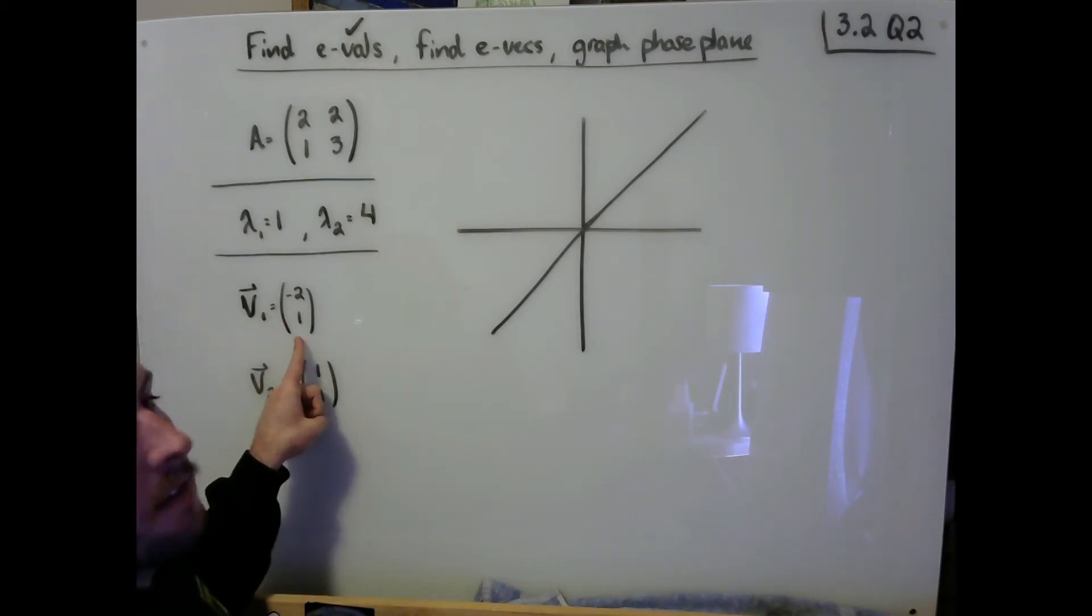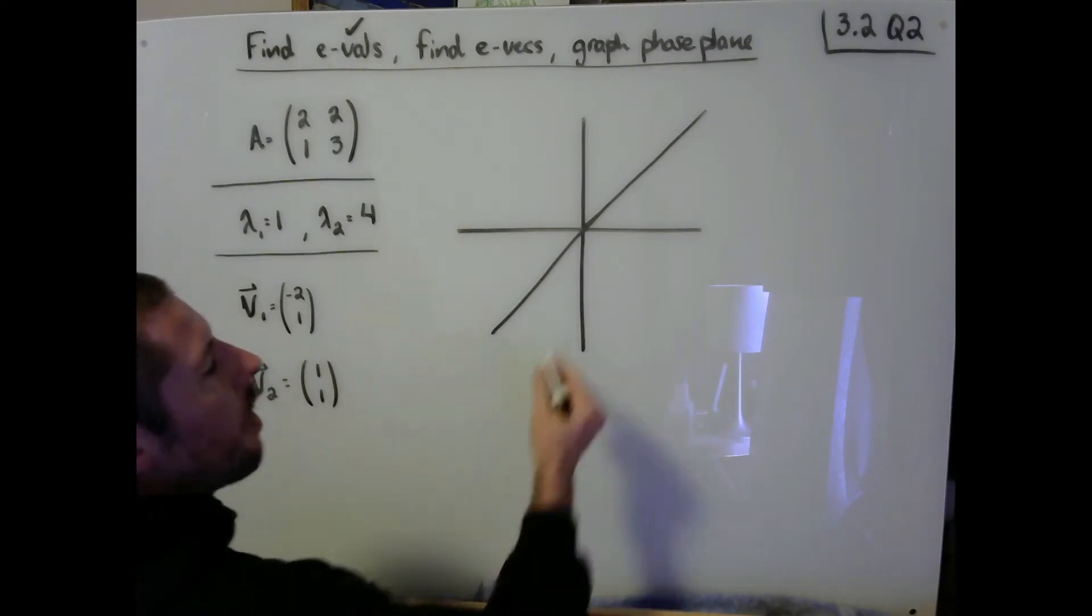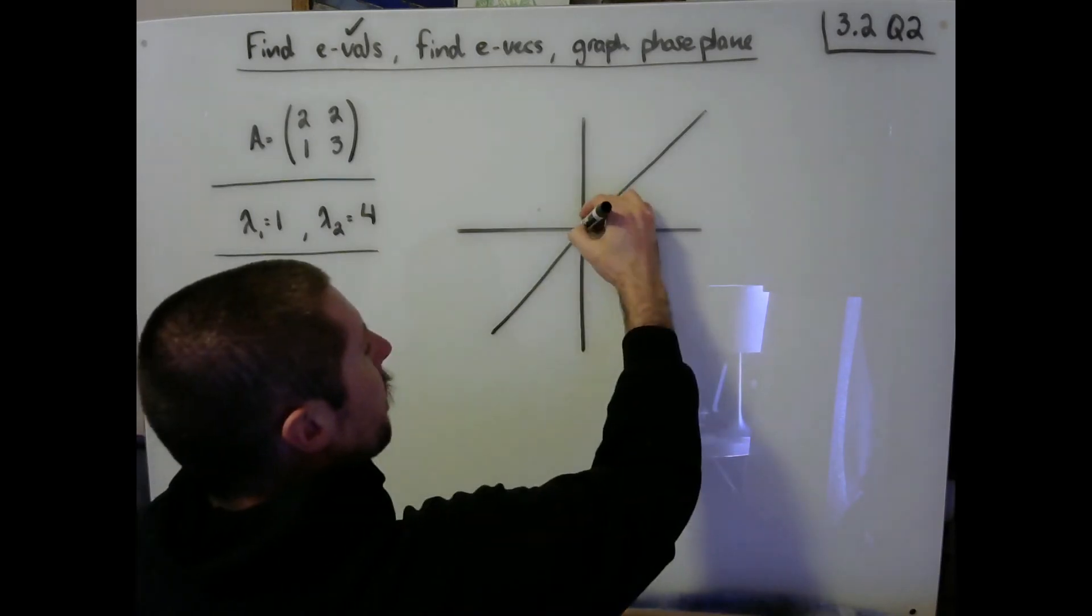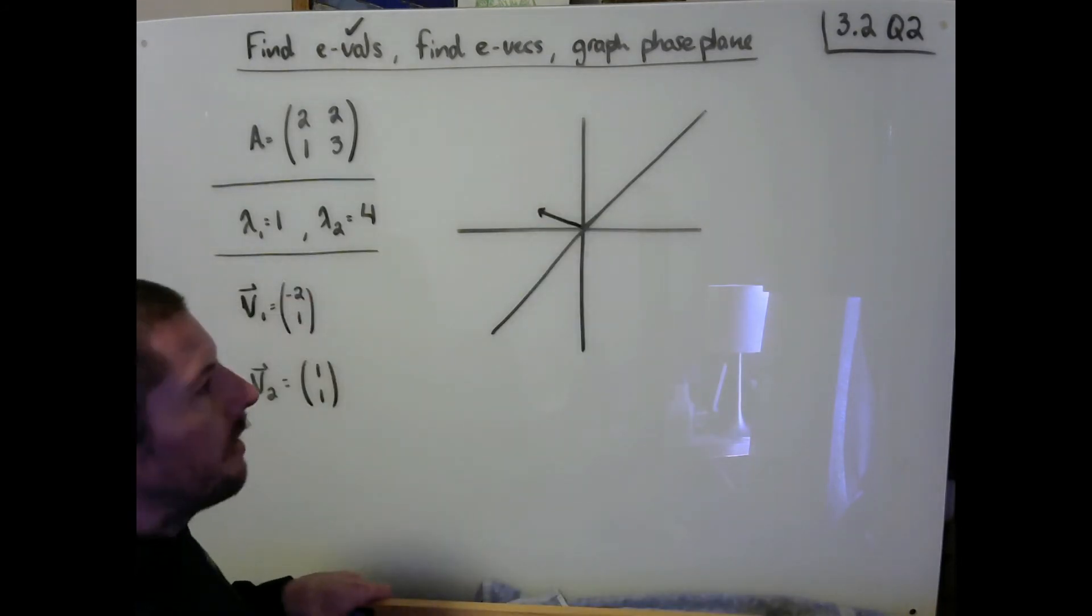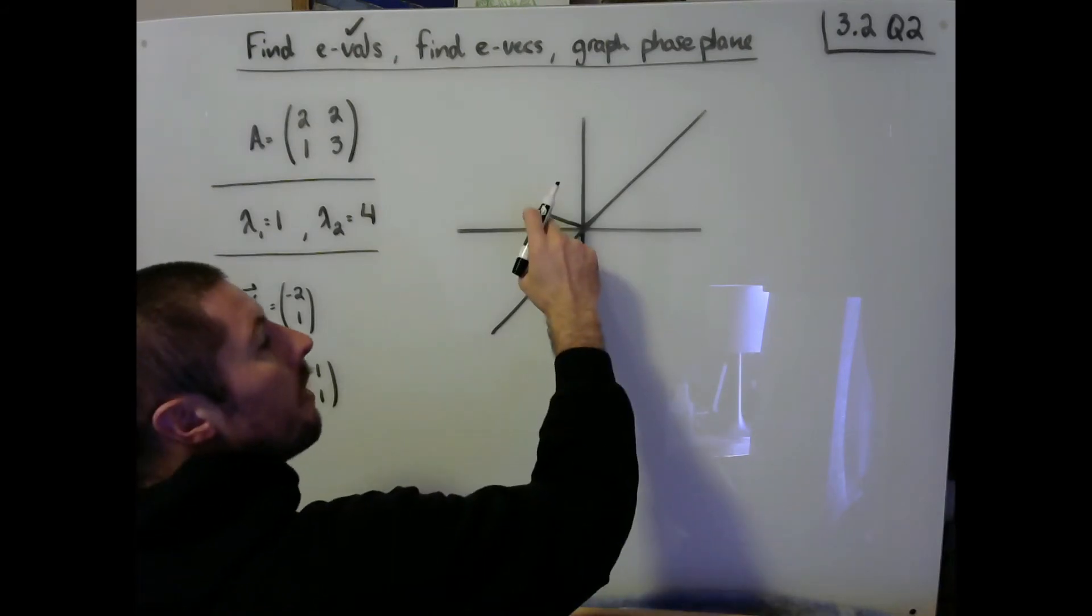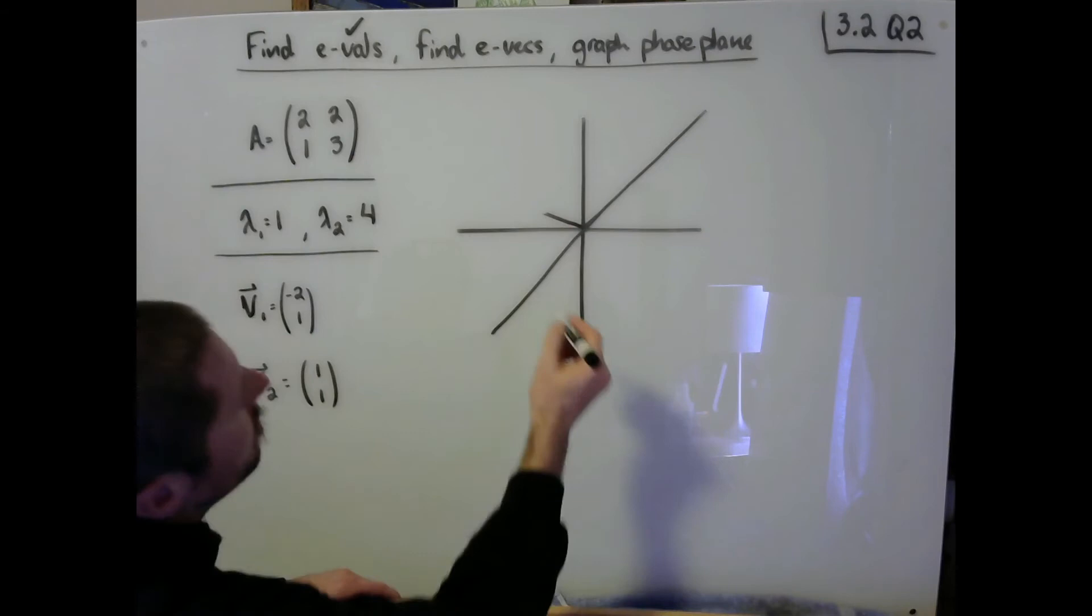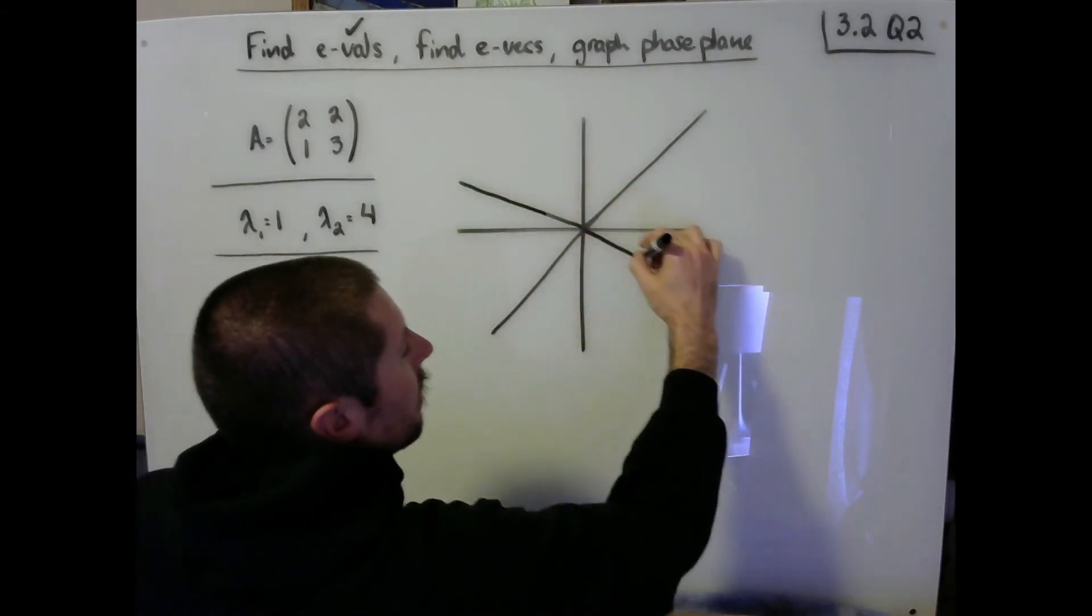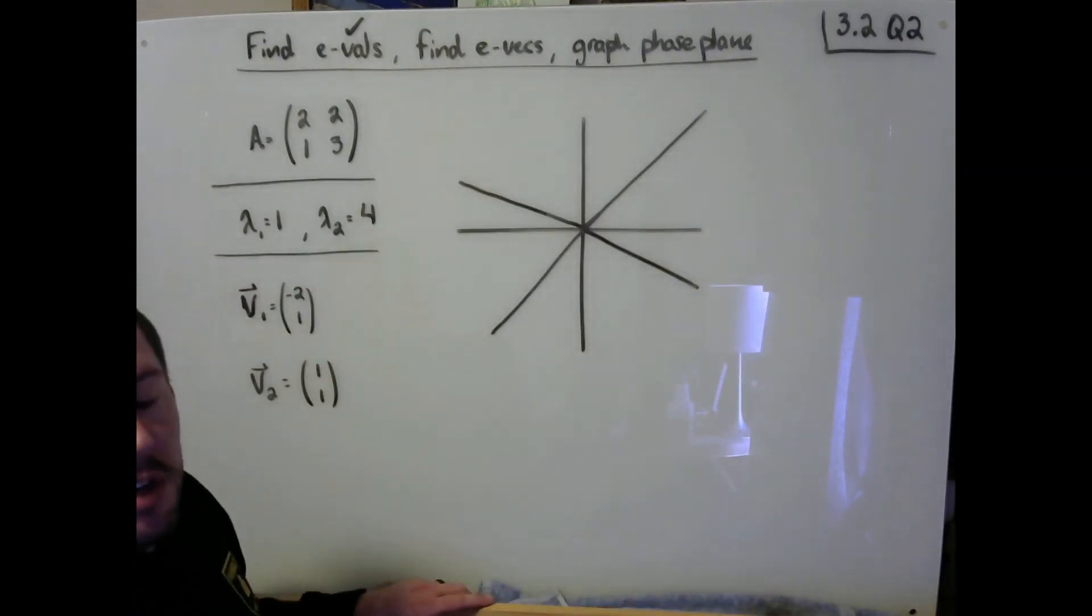Very similarly, V1 is the vector negative 2, 1. So I want to draw the line that's associated with this. So all I've got to do is go 2 to the left and up 1. That right there is the vector negative 2, 1. But I'm not just looking to draw that vector. I'm remembering that all constant multiples of this vector should be good as well. But it should be the case that this line here of slope negative 1 half is our second straight line solution associated with this system.